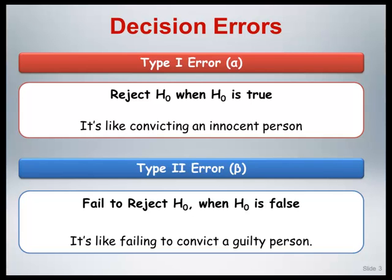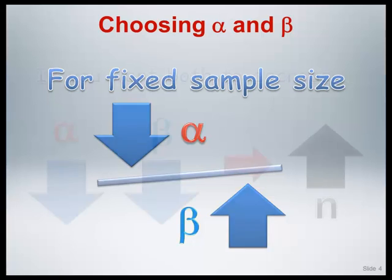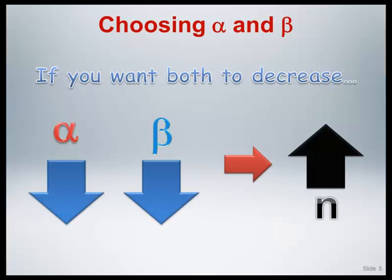In general, the type 1 error is almost always set at 0.05 and has become a rather ingrained value. For a fixed sample size, there is a trade-off between the alpha and beta error rates. If you decrease the alpha error rate so that you make fewer type 1 errors, this will cause the beta error rate to increase, resulting in more type 2 errors. This increases the importance of considering which of the two errors is more serious to commit. If you want to decrease both the alpha and beta error rates, or decrease the beta error rate without changing the alpha error rate, then you need to increase the overall sample size of your study, which will in turn increase the cost and potentially accrual time of the study.